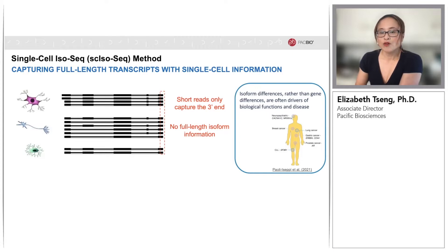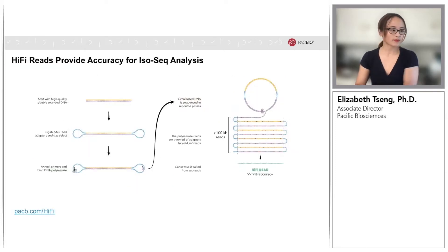However, we know for many biological functions and diseases, it is the isoform differences rather than the gene level differences that are the major drivers. To get the single-cell information, we also require the sequencing data to have high accuracy. This high accuracy and long read length is provided by the PacBio HiFi reads. PacBio sequencing is a form of circular sequencing. The data that comes out of it is highly accurate, which is important for calling SNPs as well as identifying single-cell UMIs and barcode information.